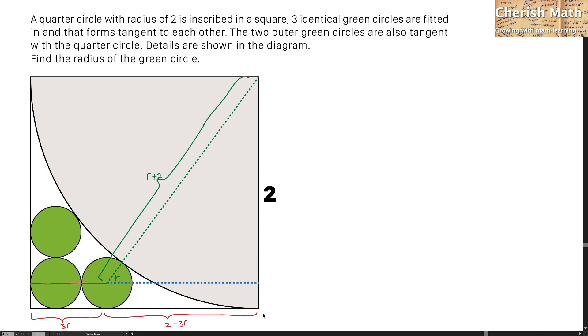For the length of this gap, it is exactly the same with the length of this radius of the green circle, which is r. And for the length that I am going to highlight here, this is going to be by using 2 minus r.